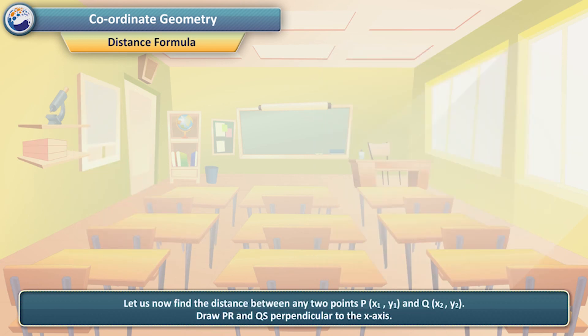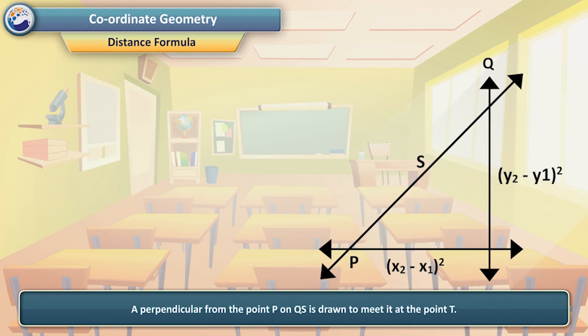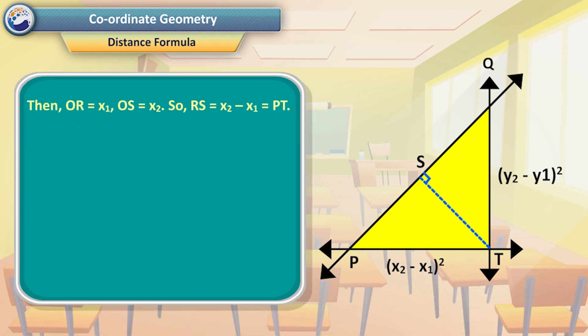Let us now find the distance between any two points P(x₁, y₁) and Q(x₂, y₂). Draw PR and QS perpendicular to the x-axis. A perpendicular from point P on QS is drawn to meet it at point T. Then OR = x₁, OS = x₂, so RS = x₂ − x₁ = PT.